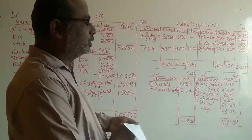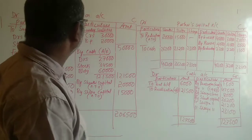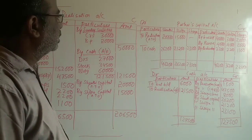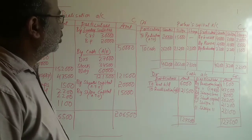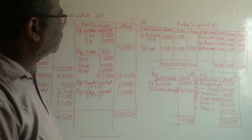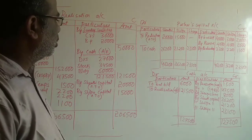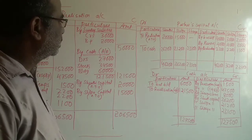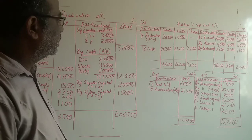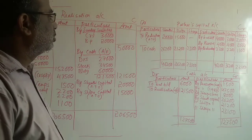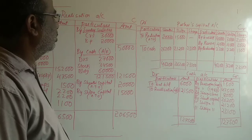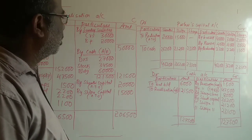This is how we solve a problem based on dissolution of a partnership firm. First, we prepare the realization account and ascertain the realization profit or loss. Then we prepare the partner's capital account and see how much balance amount has to be given to them. Finally, we prepare the cash account — showing cash inflows, previous balance, cash realized during the process, and all amounts paid against expenses, creditors, bills payable, any partner's loan, and then we return the partner's capital. This completes the model question paper practical questions — we have solved all 6 and 12 math questions of model question paper 2.